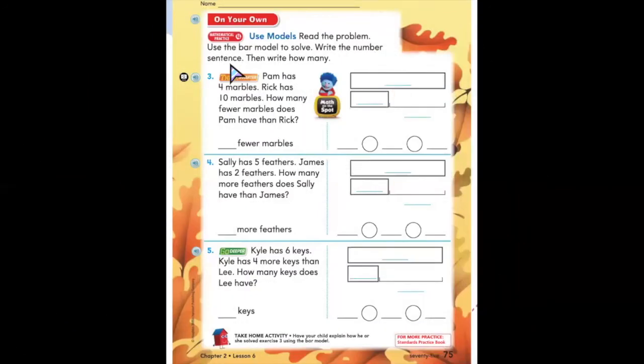Let's flip to page 75. Page 75 says on your own. At the top it says use models: read the problem, use the bar model to solve, write the number sentence, then write how many. I want you to try three, four, and five on your own — I know you can do it. Great job today, first graders. Remember to take a picture of page 75 and upload it on Seesaw so that Ms. Rodriguez and I can see how you did. Until next time, first graders. Bye.